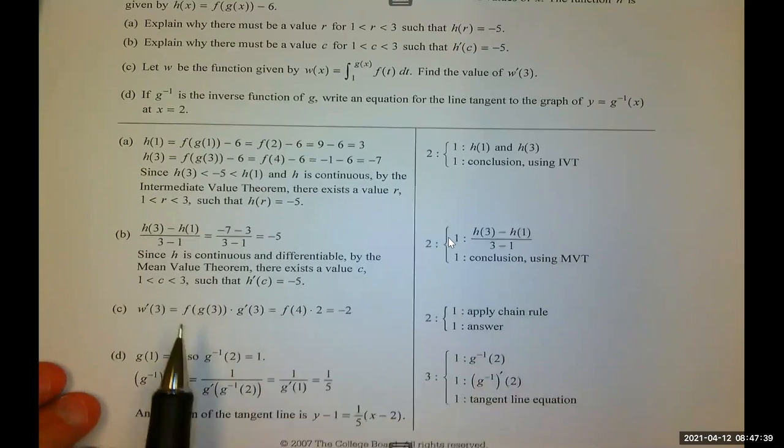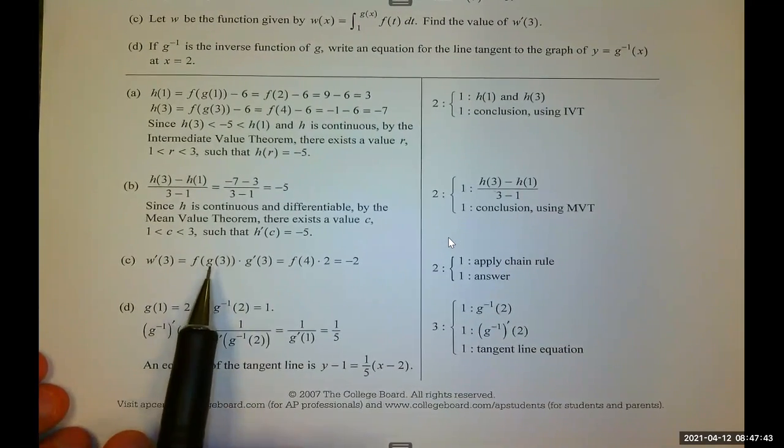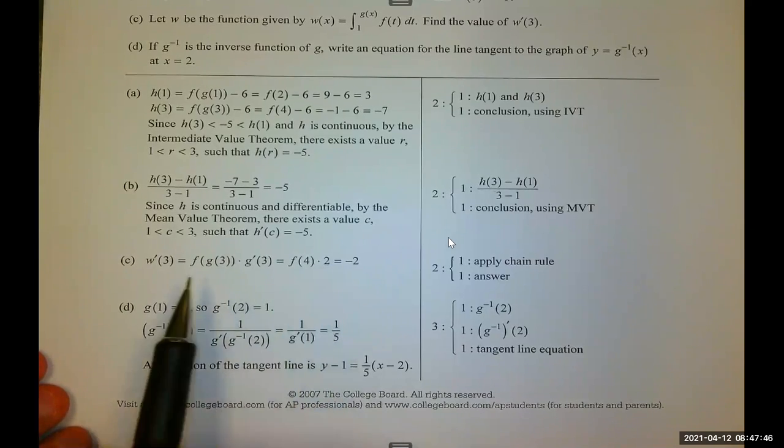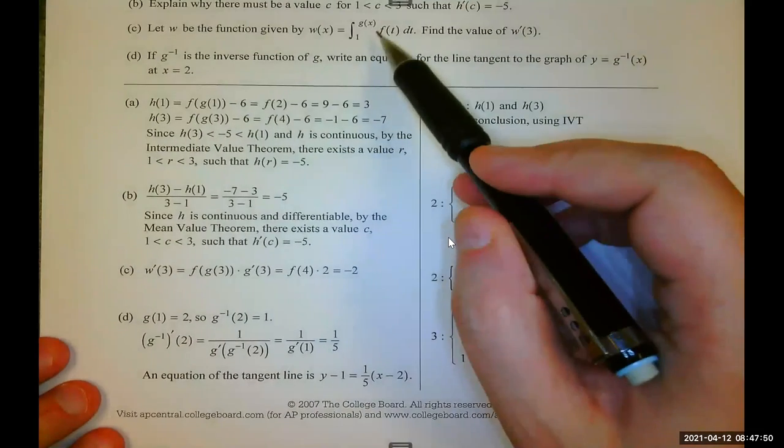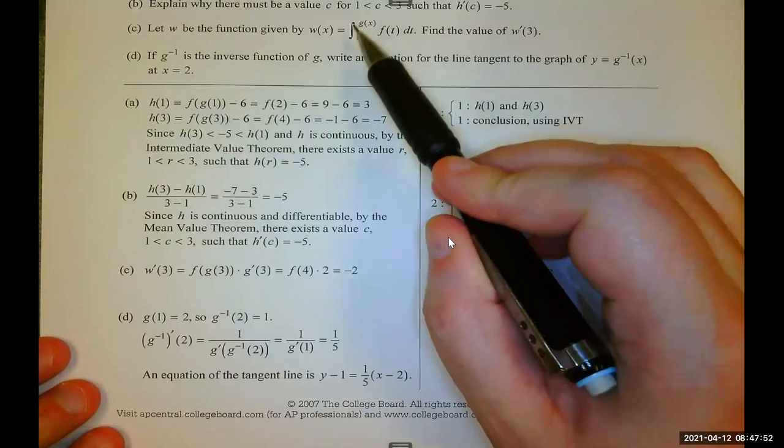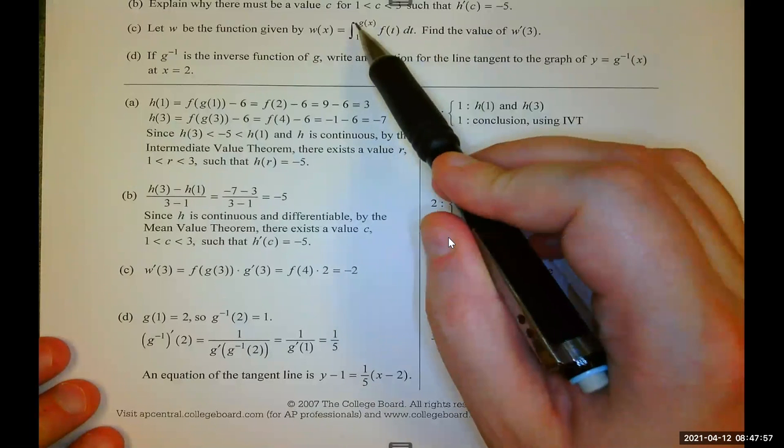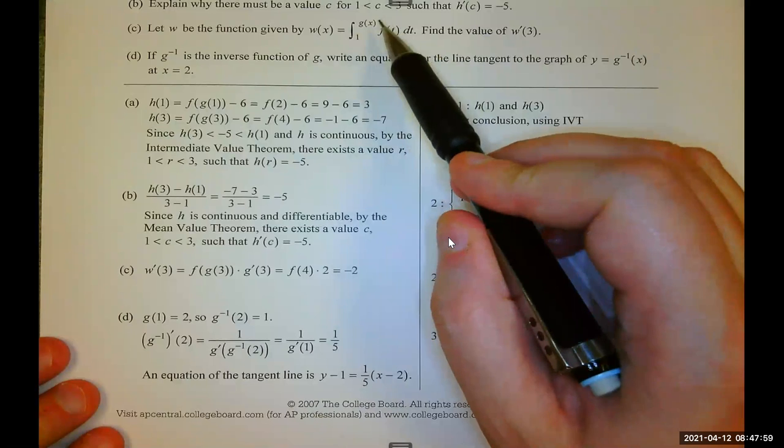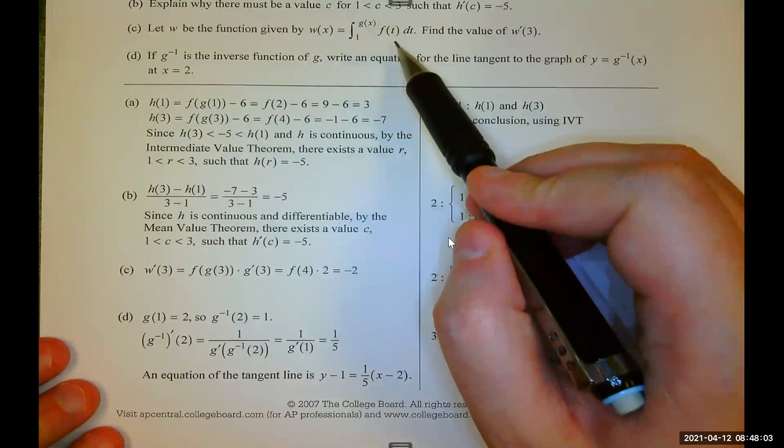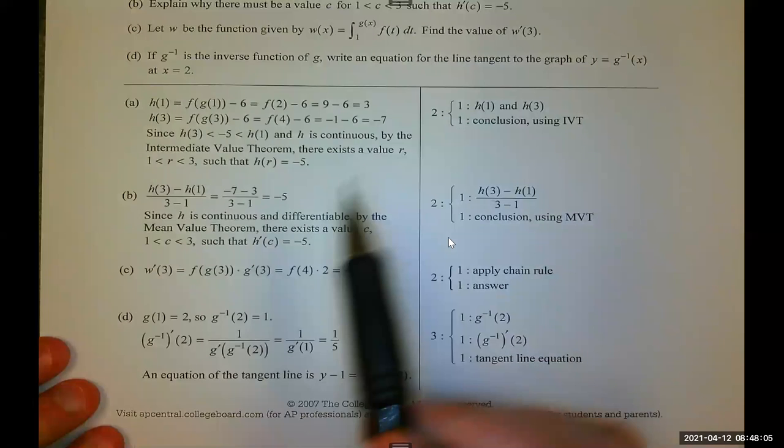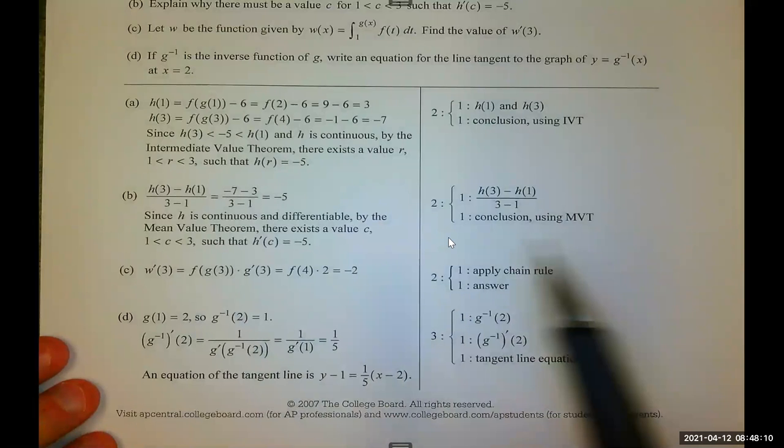Part C, W prime of 3, they jumped right into it. It's F of G of 3. So, remember, I did an extra piece there. That's because I'd like to remind you that when we're looking at an integrally defined function, the integral and derivative cancel out, but you need to remember to multiply by the thing you evaluate the function at, because that is the inside part of the function. Therefore, the chain rule applies. One point for applying the chain rule, one point for ending up with negative 2.